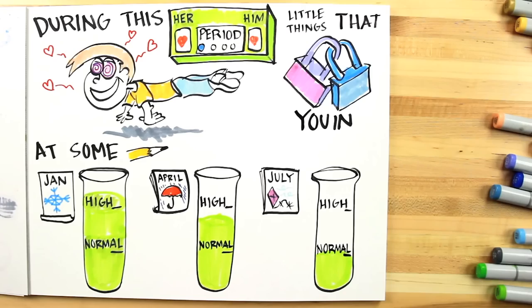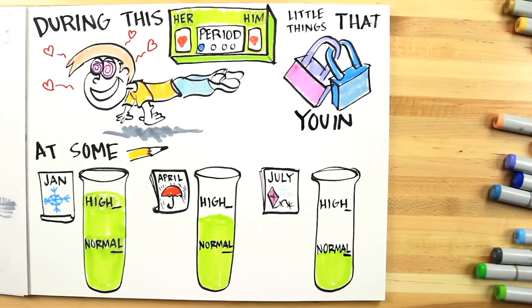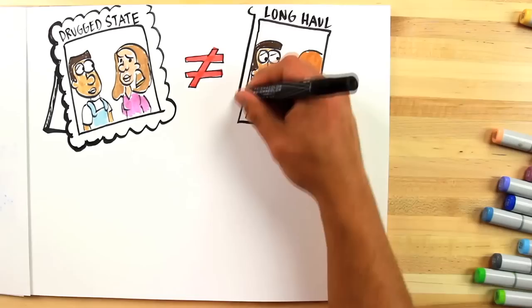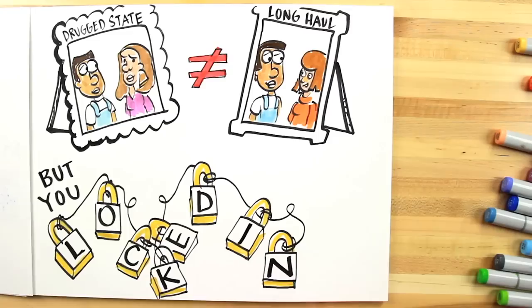At some point, your chemical levels will become more normal, and this same person you locked in with in your drug state is, in many cases, not the person you see yourself with for the long haul. But you locked in before giving yourself a chance to come to your senses.